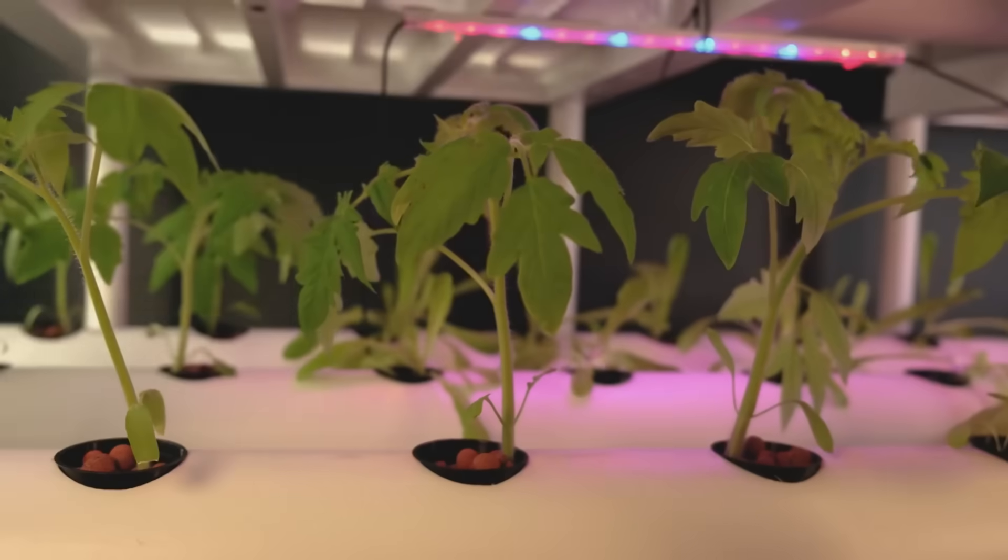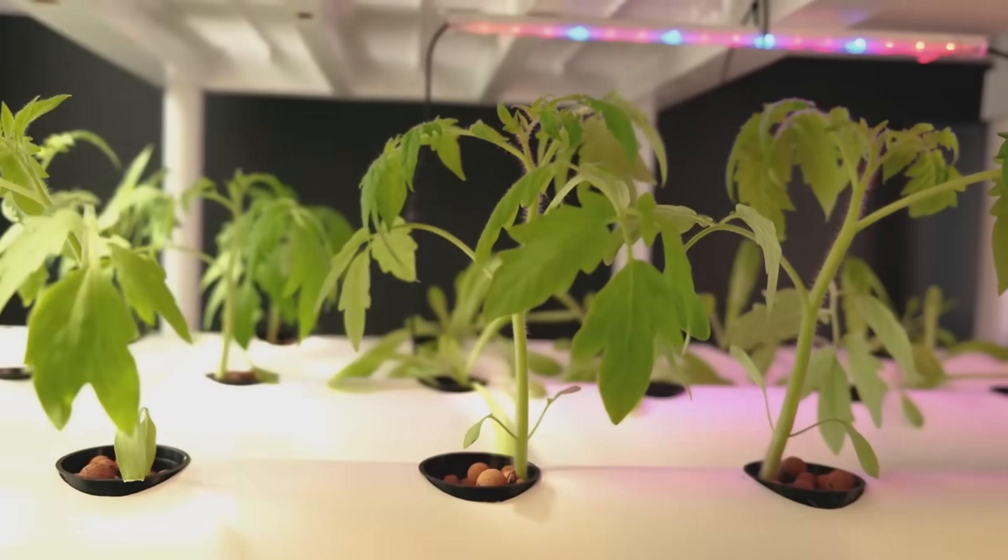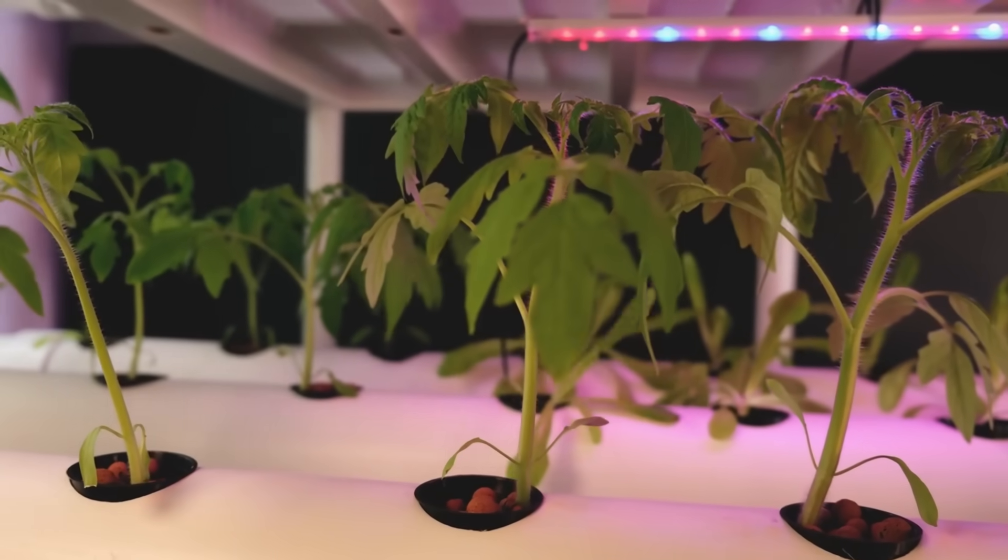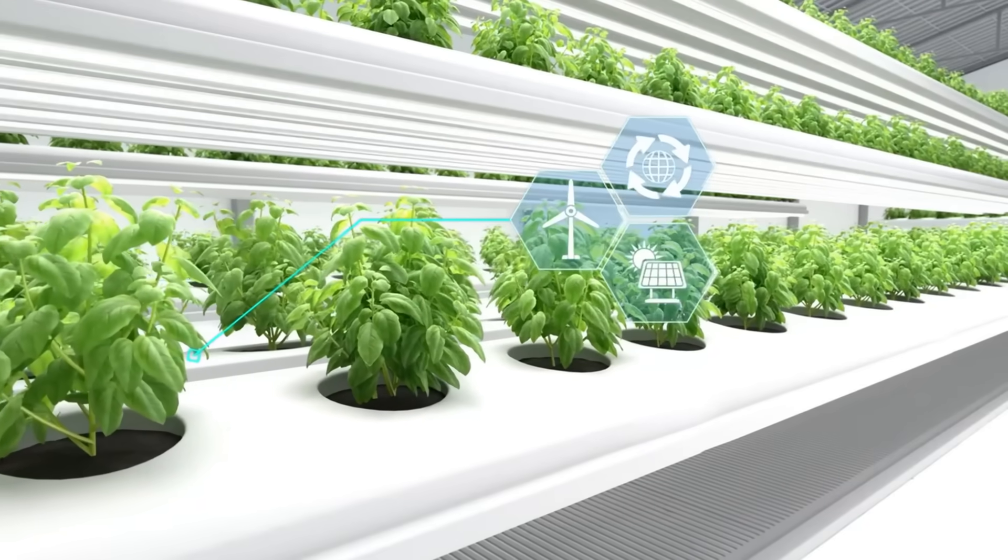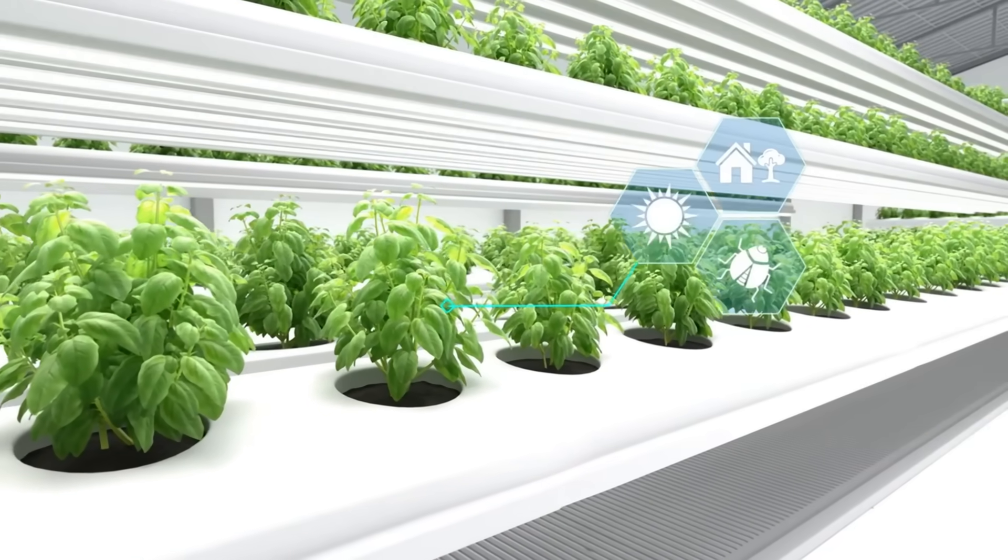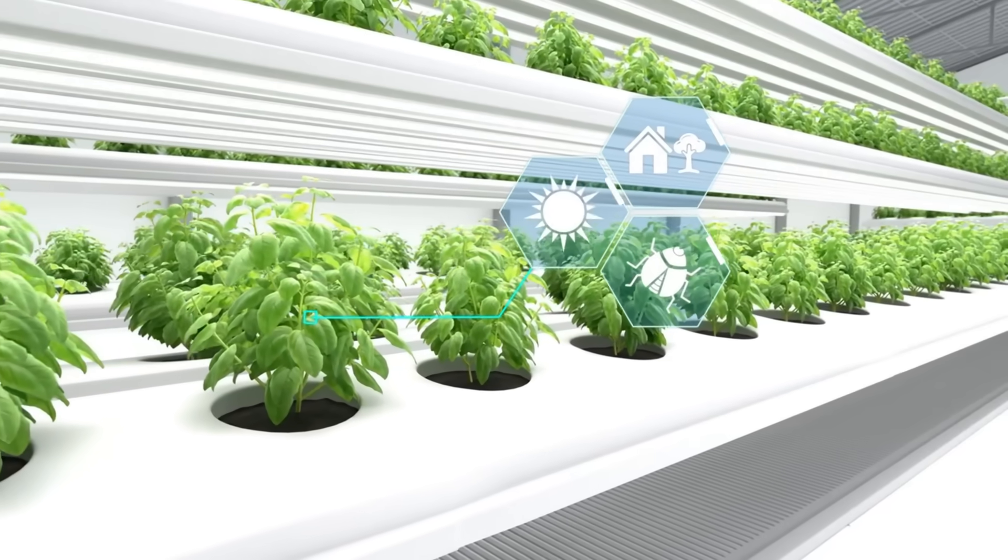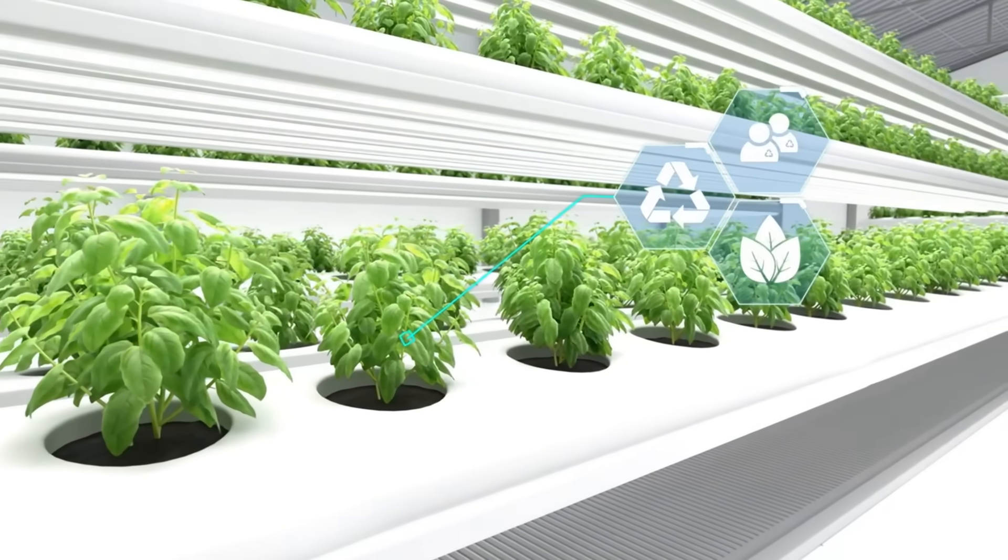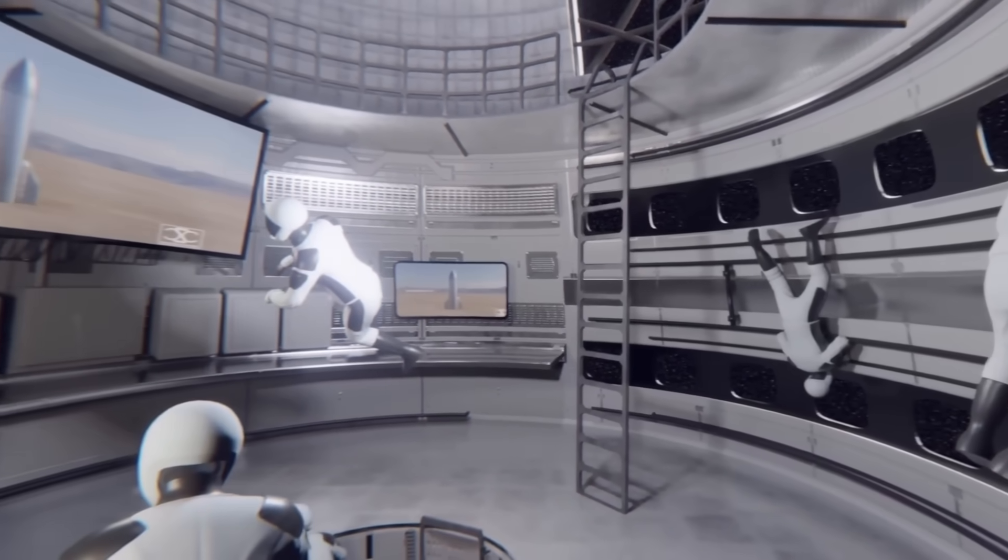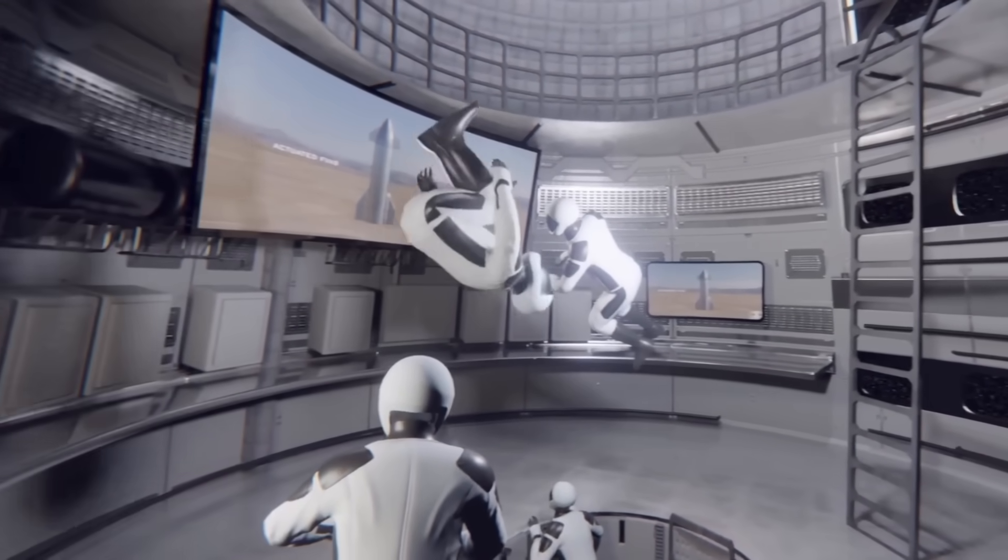A garden. Not just any garden, but a sophisticated hydroponic system where future astronauts will nurture their own fresh food. The psychological impact of tending to growing things, of seeing green leaves unfurl in the sterile environment of space, cannot be overstated. This isn't just about nutrition. It's about maintaining that crucial connection to Earth while venturing far from home.